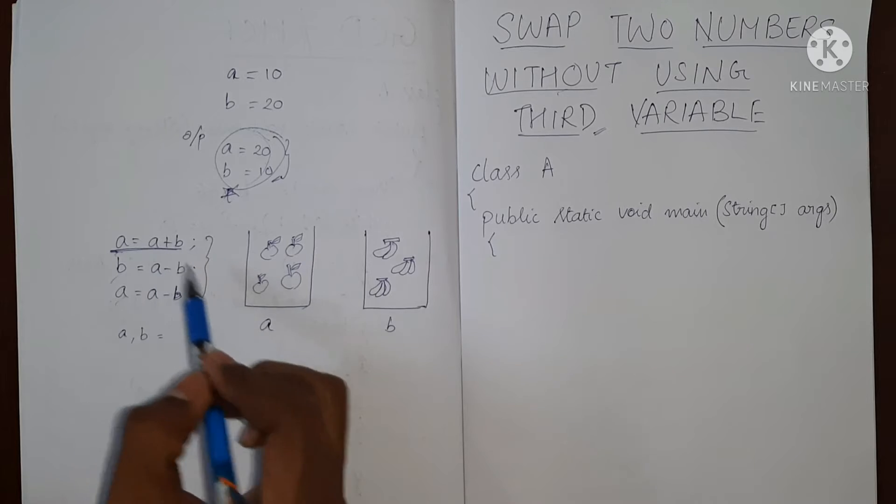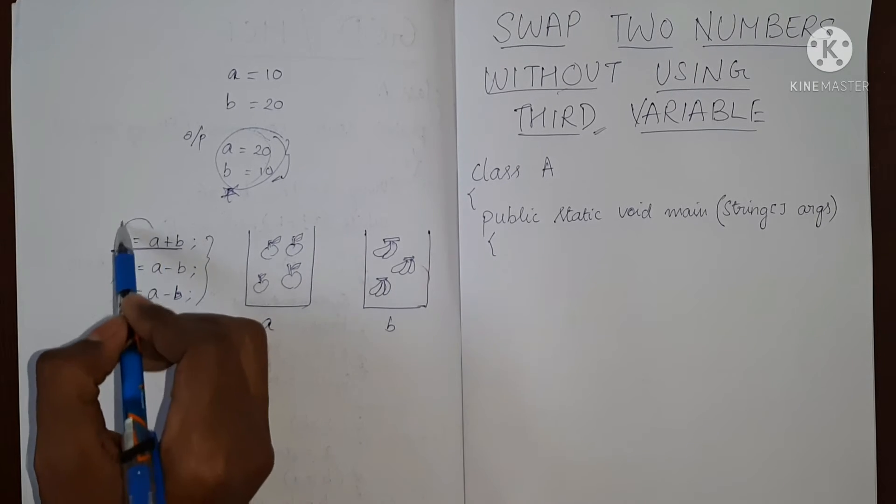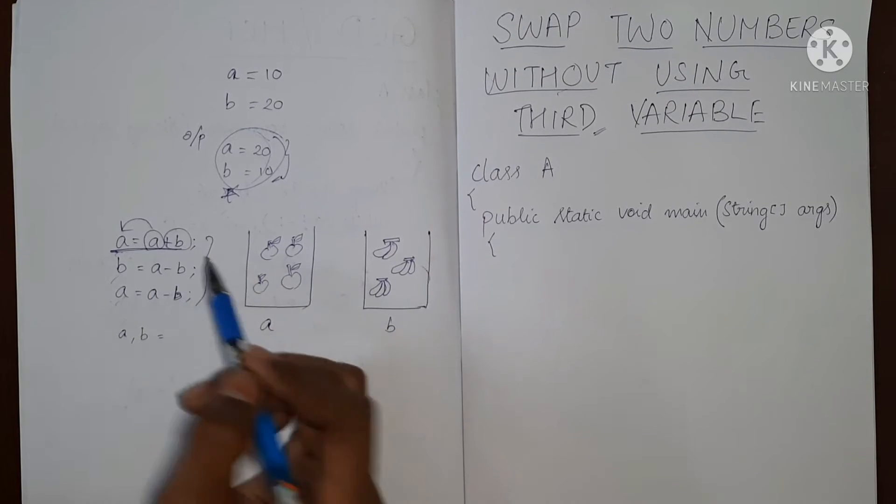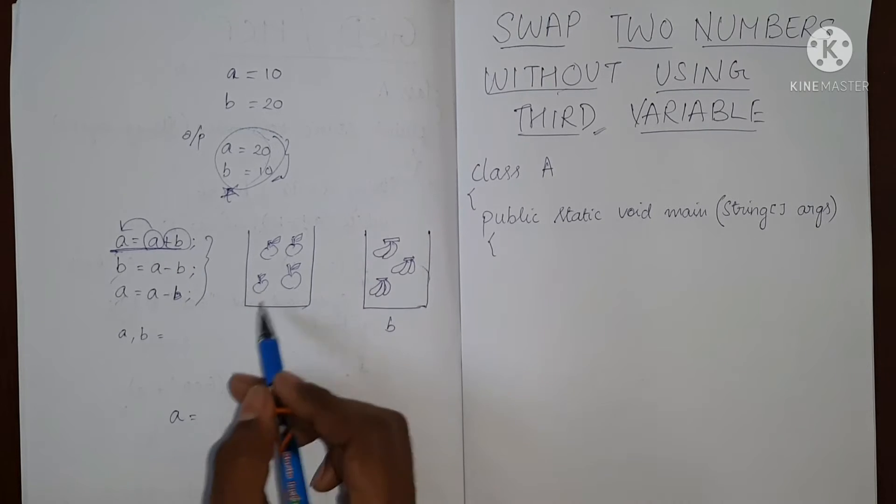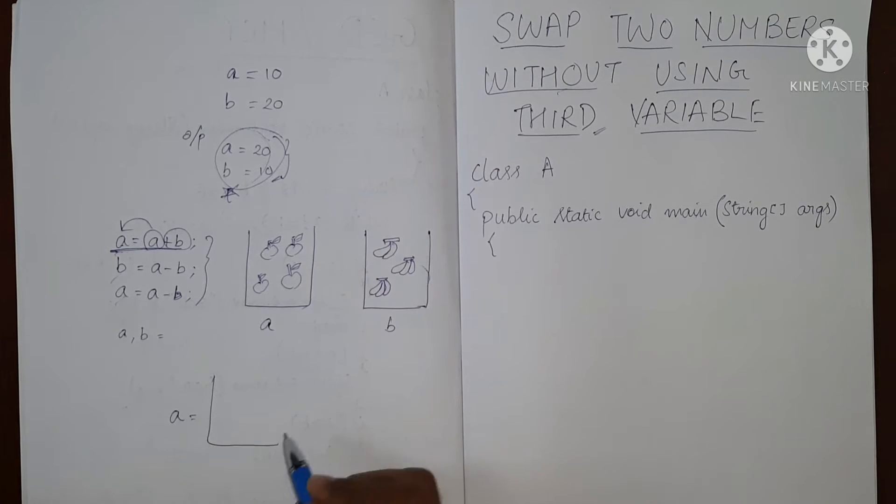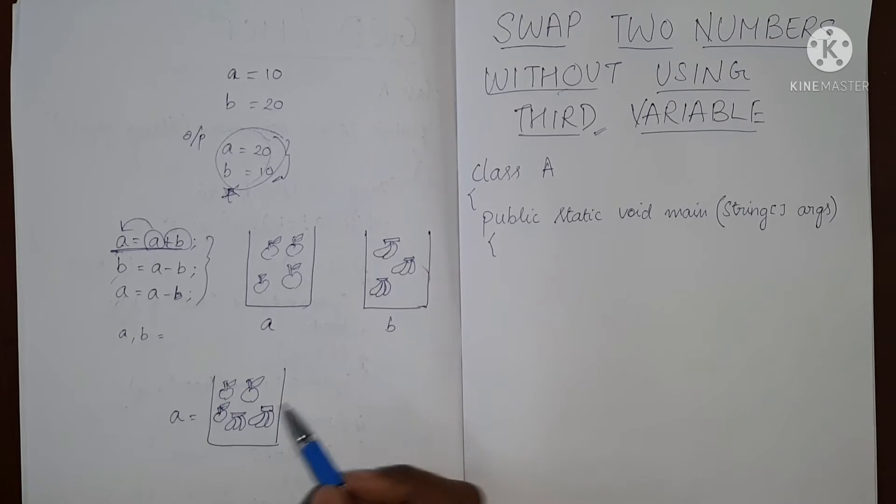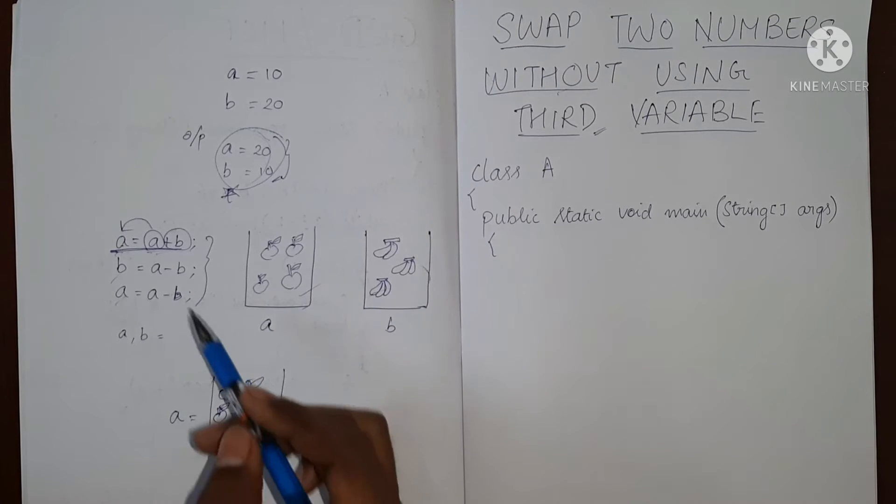So basically we are adding what is in a and what is in b and we are storing it back in a, so we are creating a mixture of both apples and bananas. So now our new a will be a equal to a plus b. So now a will be having apples and bananas. So now we have created a, which is a mixture of both apples and bananas.